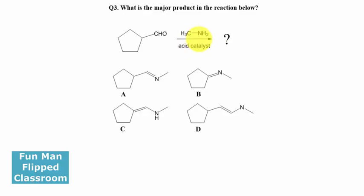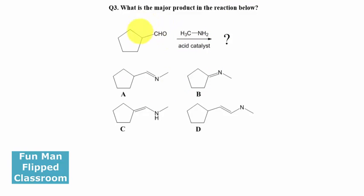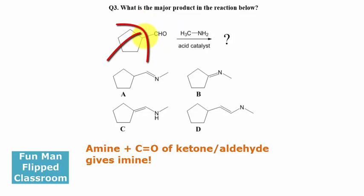With acid catalyst, always recognize a primary amine, acid catalyst, carbonyl group - it will form an imine. Now between these two imines, which is the one? You can count the number of carbons carefully: five in the ring plus one more outside.